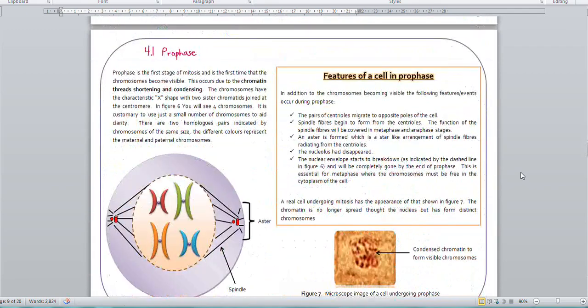If I scroll down now to the mitosis section, the first stage, of course, is prophase. Now, with the structuring of this essay, I would do it in the correct order. So I would start off with interphase and then I would go on to prophase. So in prophase, of course, you've got the condensing, the shortening of the chromatin to form visible chromosomes.